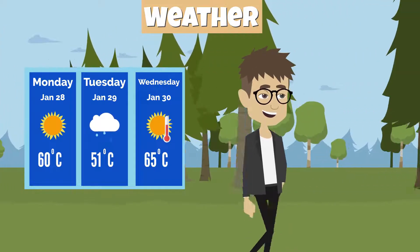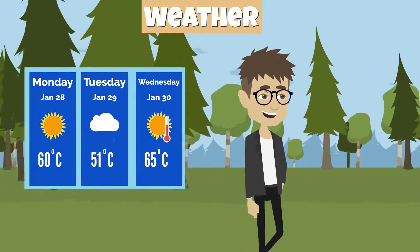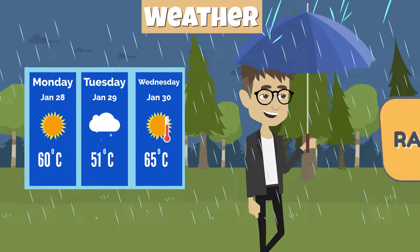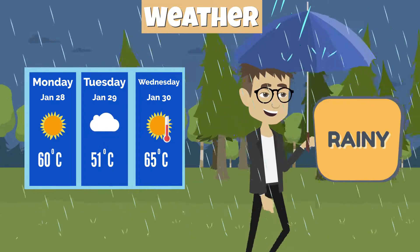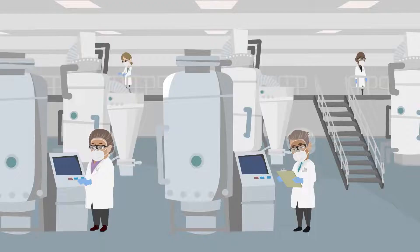For example, on different days throughout a week, it may be either sunny, rainy, or humid. Scientists have helped develop tools that help us understand the condition of the atmosphere.